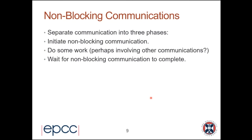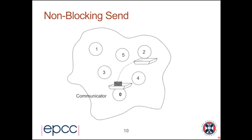We separate communication into three phases: initiate the non-blocking communication, do some work (possibly involving other communications), then wait for the non-blocking communication to complete - you must do that. A non-blocking send is a bit like having an outbox. With a blocking synchronous send I say 'please send this message' and wait till it's sent; if it's never received I wait forever. Non-blocking is like putting the message in the outbox and saying to MPI 'could you please deliver that - I'll come back later and check.'